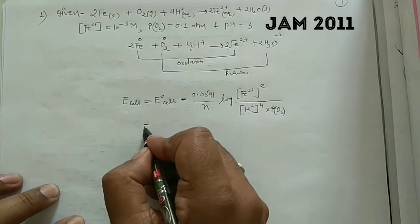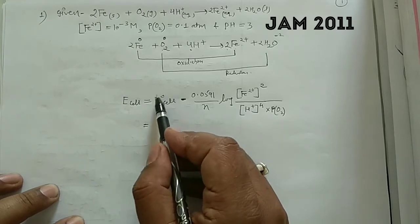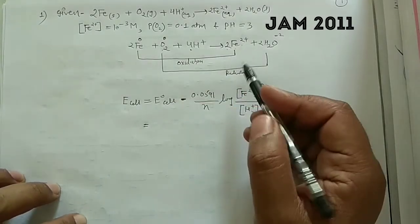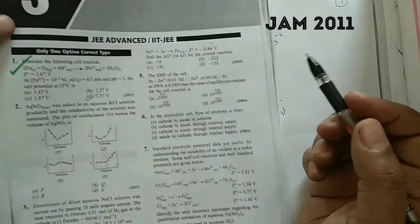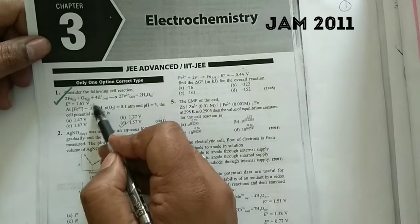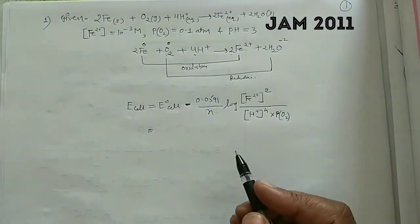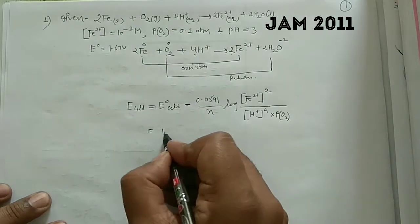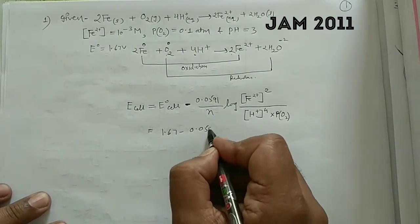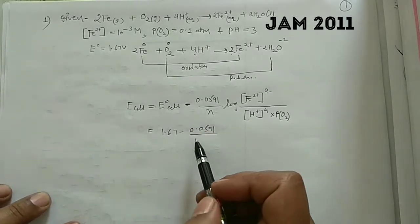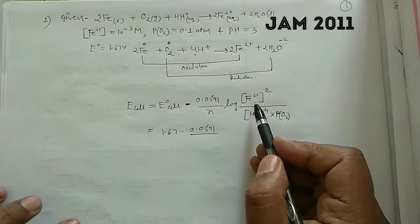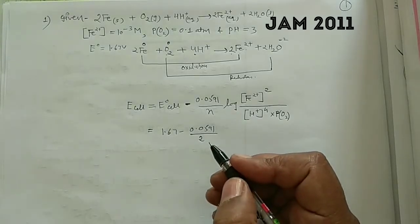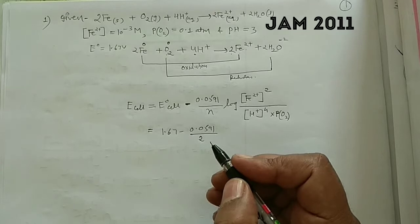E°_cell is given in the question as 1.67 volts. So we write 1.67 minus 0.0591 divided by the number of moles of electrons. Fe²⁺ forms from Fe, so 2 moles of electrons are involved per iron atom. However, looking at the full balanced reaction with 4 H⁺ consuming 4 moles of electrons, we write n = 4.